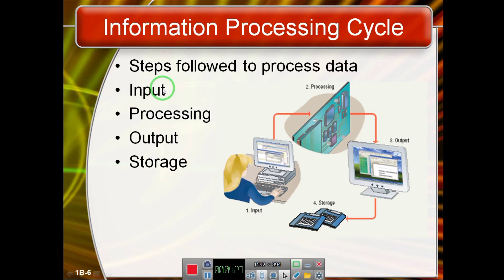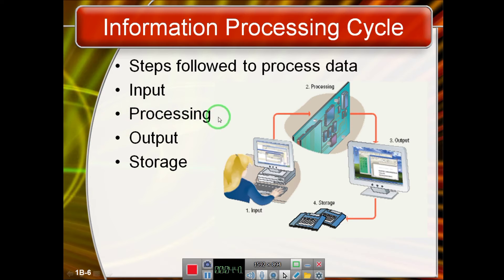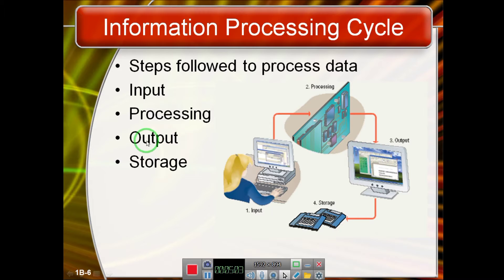The process of transforming data into information starts with fetching the data — we call this the input phase. We have different hardware for input, like keyboard, mouse, and microphone. The input data is forwarded to the processing hardware, which does the job of transforming data into information. That information is then displayed to the user via output hardware such as a printer, speaker, or monitor or LCD. At the same time, the data is stored on storage media like a hard drive or CD.